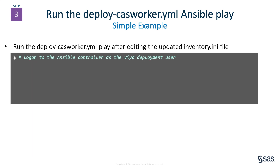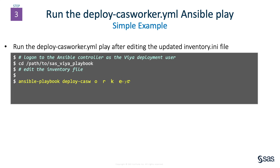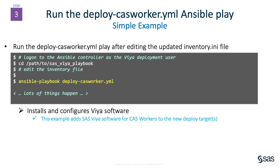The deploy-casworker.yaml play file contains the instructions that Ansible will follow to install SAS Viya software for the CAS worker. After editing the inventory file, we're ready for Ansible to install the software on the new host by calling the Ansible playbook command and specifying deploy-casworker.yaml as the input file. Running the deploy CAS worker play will produce a lot of text output as Ansible performs the installation on the new CAS worker host. This won't interrupt any current Viya processes or user activity.